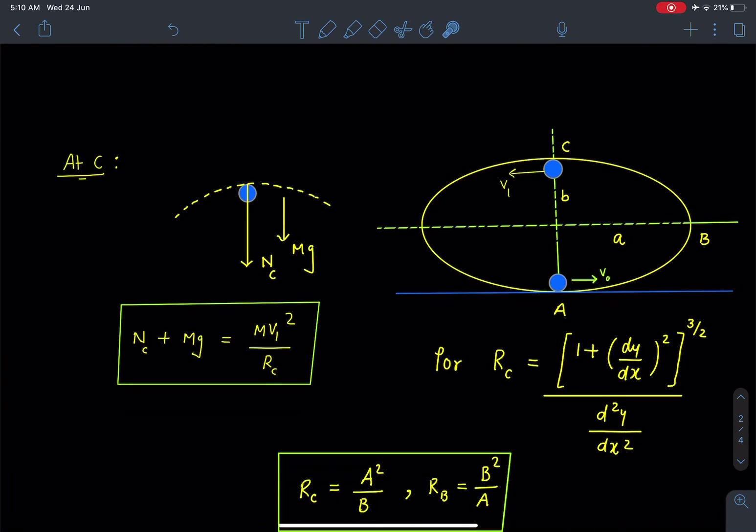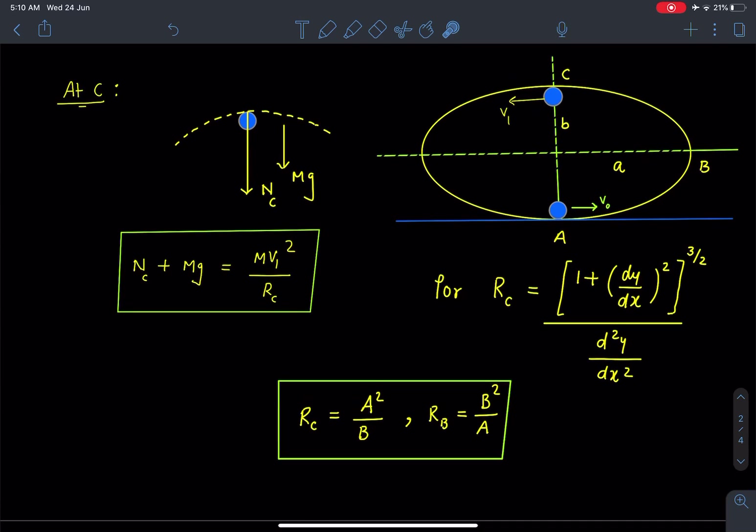The maximum tendency of losing contact will be at this topmost point. If the particle doesn't leave contact at point C, then it is going to complete this elliptical path.